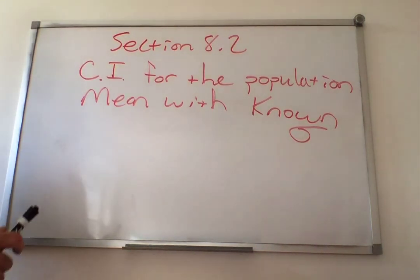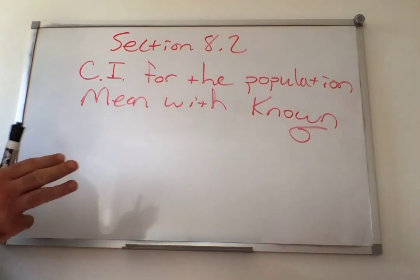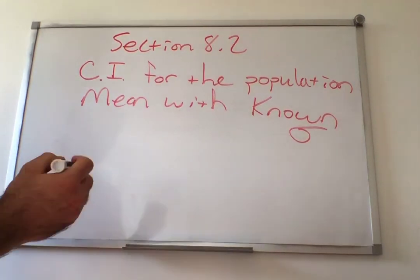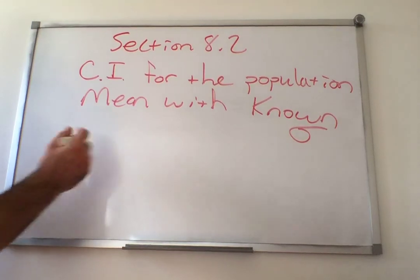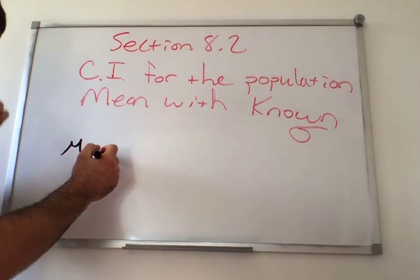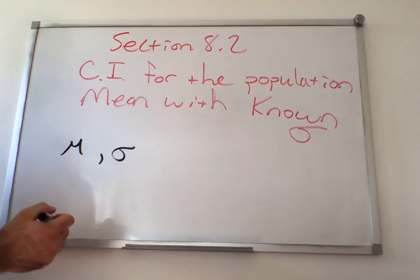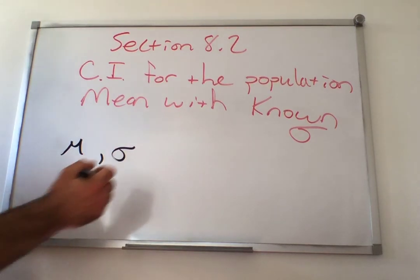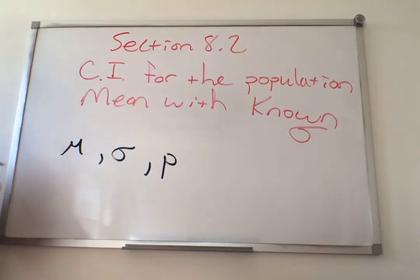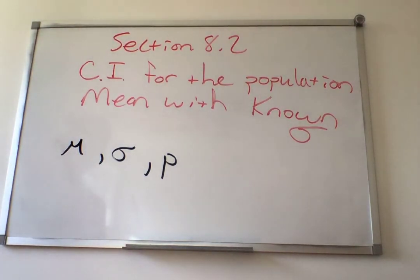We've got three population parameters. We've got the population mean, mu. We've got the population standard deviation, sigma. And we also have the population proportion, p. Those are the three population parameters we're going to be dealing with when making confidence intervals.